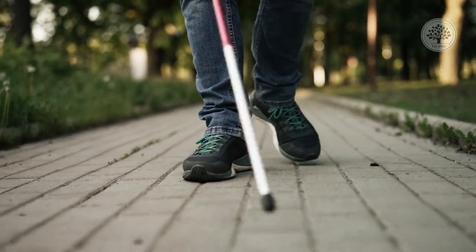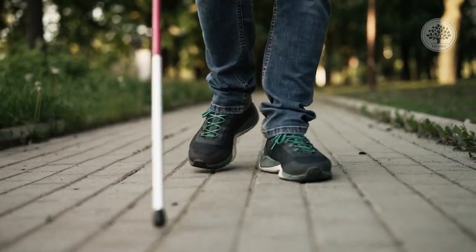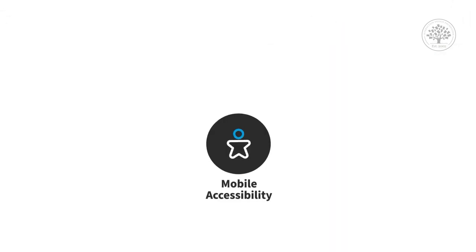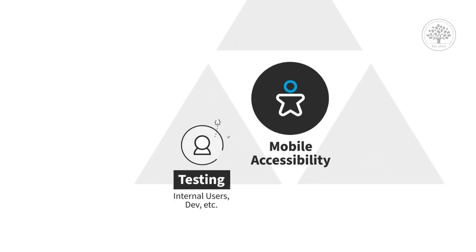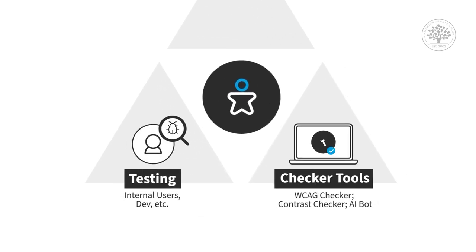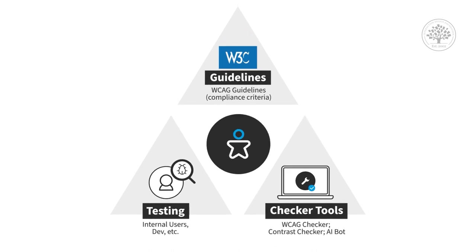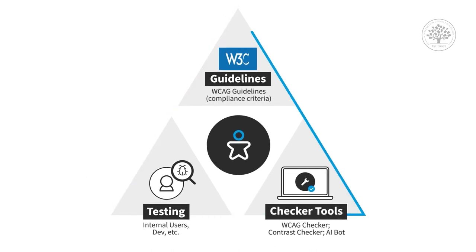Just like user testing, it's important to accessibility test your mobile app, site, or mobile content, and to know if users with disabilities are able to use your mobile app or site. The three approaches you need to take simultaneously to do this right: test with users in addition to using checker tools and the W3 guidelines — you need a triangulated approach.